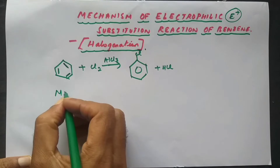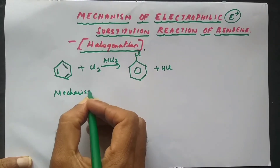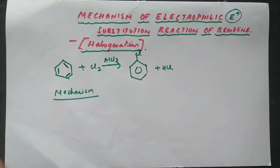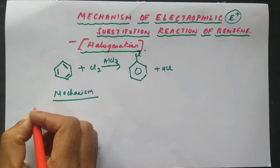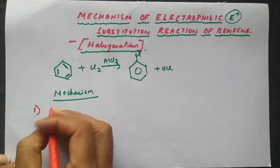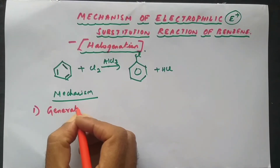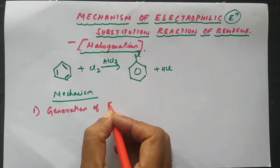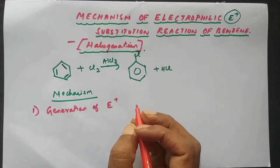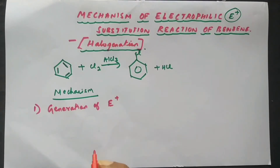Now let us go to the mechanism. The mechanism involves three steps. Step one will be the generation of the electrophile.